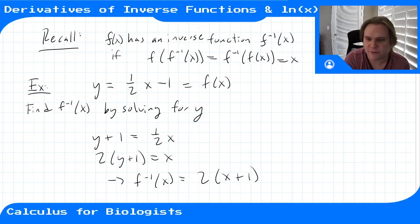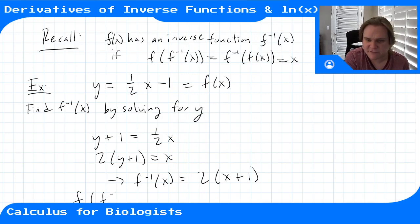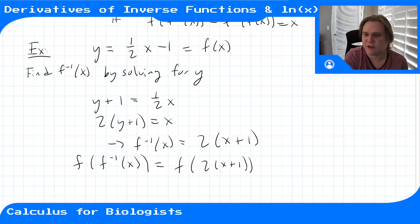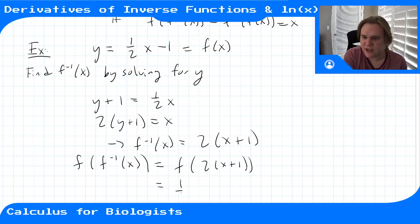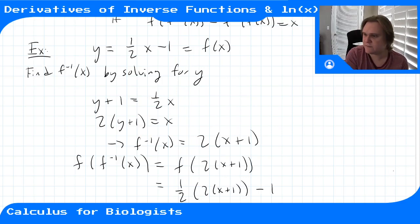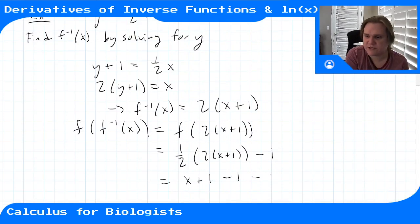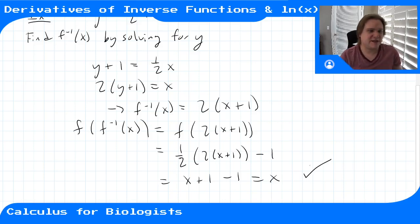If you apply f to f inverse, you end up with x. So f of f inverse: I'm applying f to 2x plus 1, plugging 2x plus 1 into ½x minus 1, so that gives me ½ times (2x plus 1) minus 1. That gives me x plus 1 minus 1, which is indeed x. So that is the inverse function.